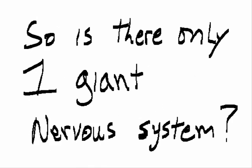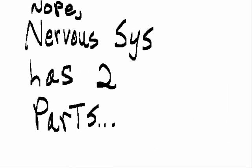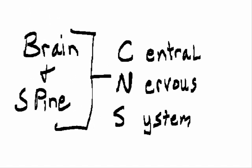So is there only one giant nervous system? Nope, the nervous system has two parts. The brain and spine make up the central nervous system.